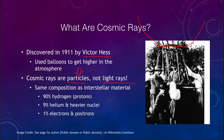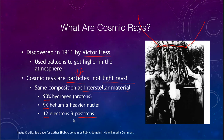Cosmic rays are particles, not electromagnetic radiation. They are essentially the same composition as regular interstellar material: about 90% hydrogen nuclei (protons), about 9% helium or heavier nuclei, and about 1% are electrons and positrons. The positron is the antiparticle of the electron.